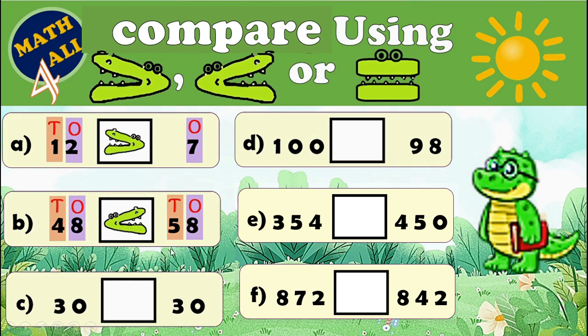Example C: 30 and 30. I think it's so easy! Here we have two digits and also two digits. We have 3 in the tens place and 0 in the ones place on both sides. So Number Gator will eat both of them — it will be equal. Let's read it: 30 is equal to 30.